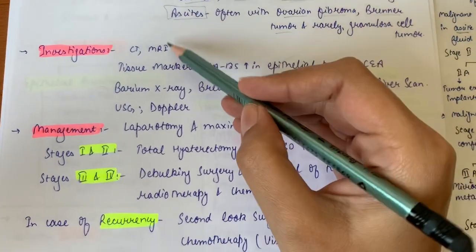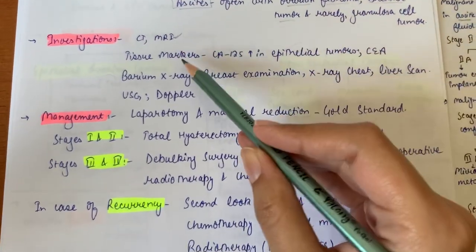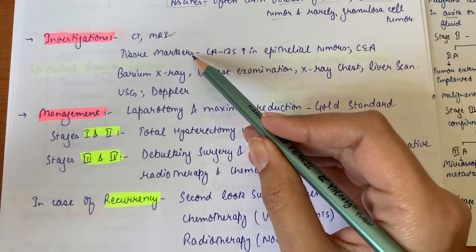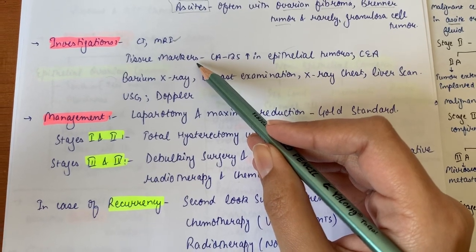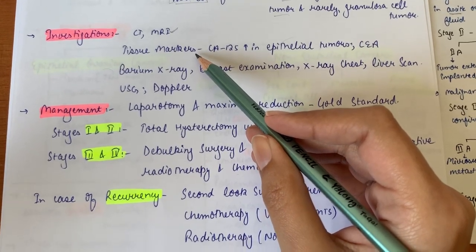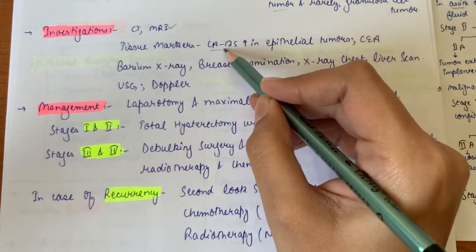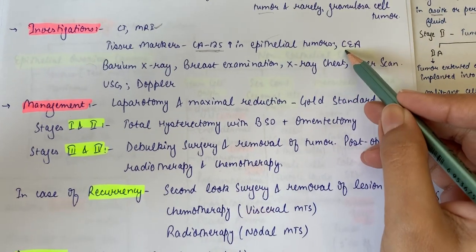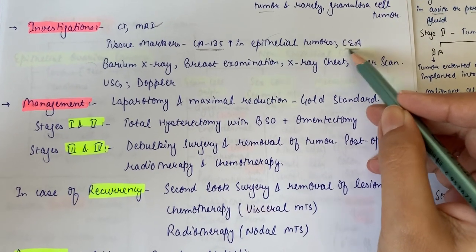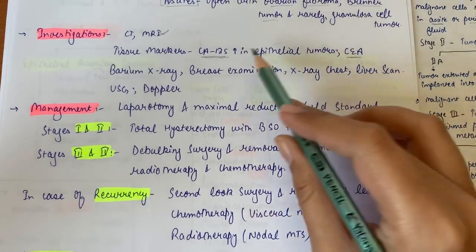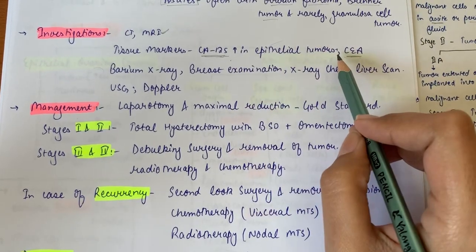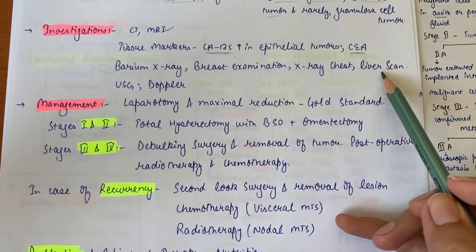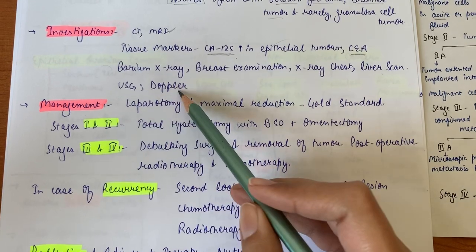For investigations, the first investigation should be CT or MRI. Then we can see tissue markers - in germ cell tumors we can have biochemical substances checked like inhibin, hCG, alpha-fetoprotein, etc. We can have CA-125 levels which are elevated in epithelial tumors, and also CEA levels - that is carcinoembryonic antigen levels are high, but they are not specific just for ovarian cancers. Further, barium x-ray, breast examination, x-ray chest, and liver scan can be done for seeing metastasis. Ultrasonography and Doppler of the ovary can be performed to see blood supply.